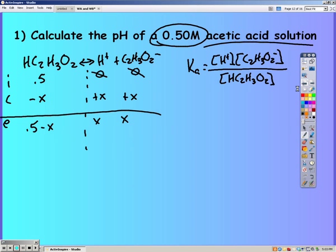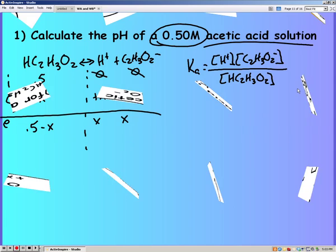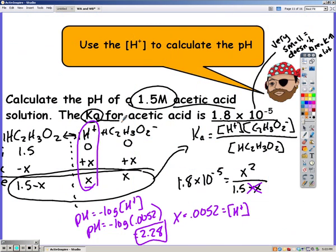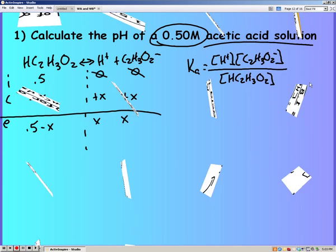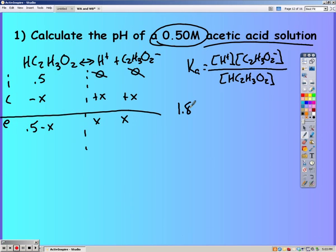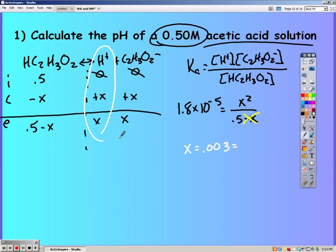Now that I have my equilibrium line, I can plug it into my Ka expression. Since it's acetic acid, I have the same Ka as previously, because the Ka does not change for an acid. I can still ignore minus X, and now solve for X. So multiply by 0.5 and square root, and I get my concentration of H to be 0.003. So then my pH I can find to be 2.52.